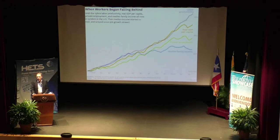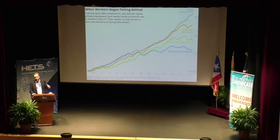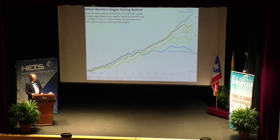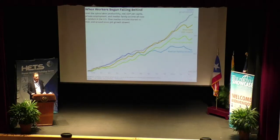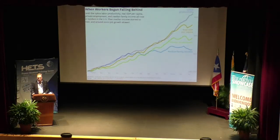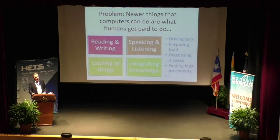Around 2000, with the introduction of computing and automation, we started to see a separation. It's called the great decoupling by Brynjolfsson and McAfee — between labor productivity and these other indices of human well-being. Some folks think this is a function of computers taking over jobs from people and leaving less of the pie for humans and more for companies that produce the automation. So leaving that aside for a minute — this is not happening with online learning.